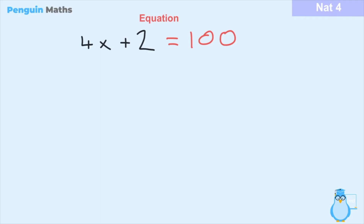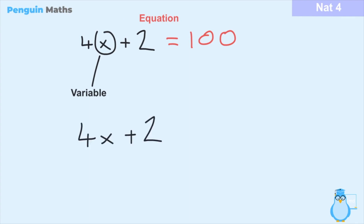We said in our lesson on equations that an equation equates one thing to another — saying this thing and this thing are equal. Often on one side of an equation we have a variable such as x plus numbers, and on the other side something that this thing is equal to. But in algebra, if we just have this by itself containing a variable plus other numbers, and it isn't equal to anything, we call this by itself an expression.